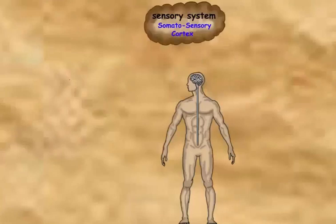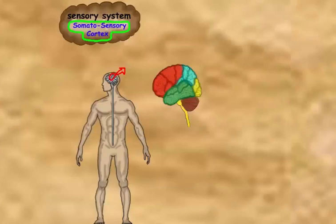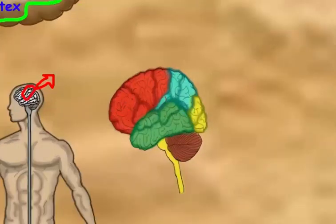So far we've been using the term 'sensory cortex' a lot — so where is the somatosensory cortex and what is it? It is located in the parietal lobe, behind the central sulcus, in a gyrus called the post-central gyrus. There we find S1, or the primary sensory cortex.